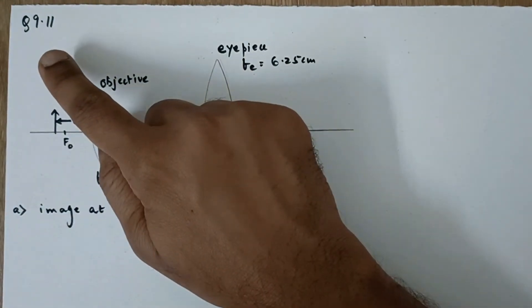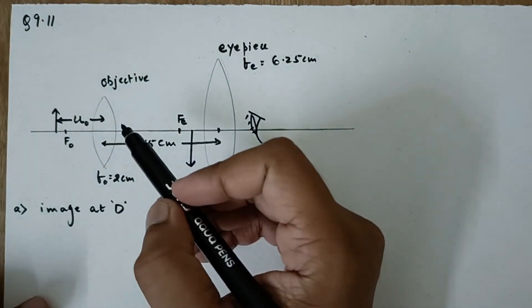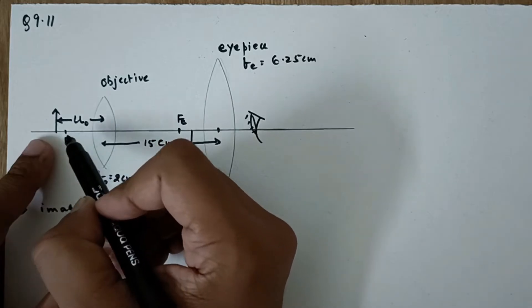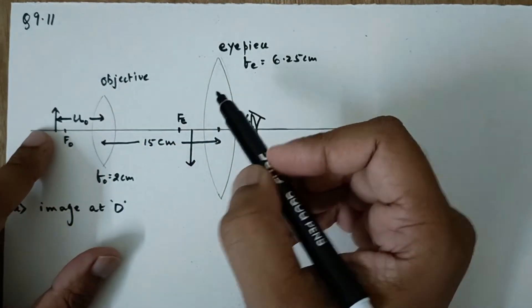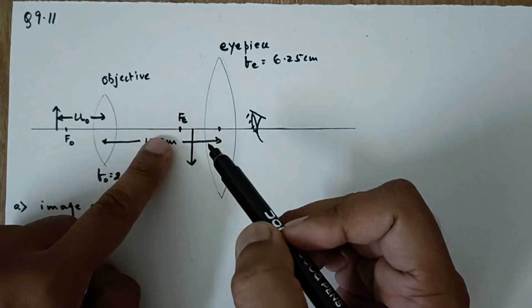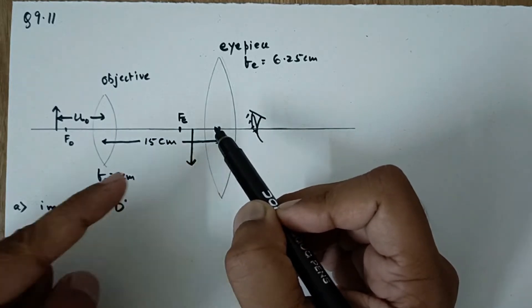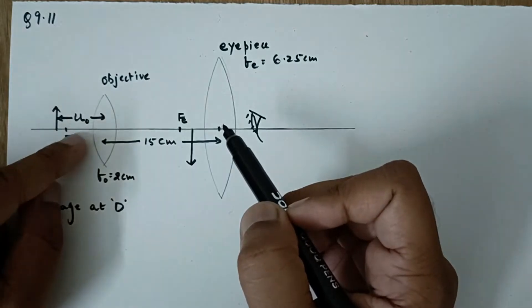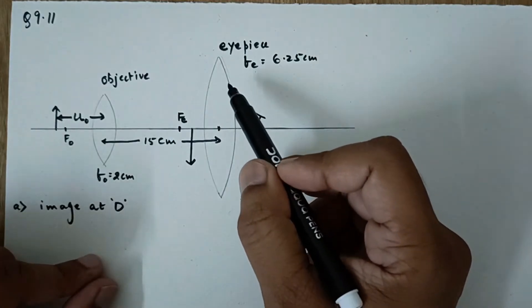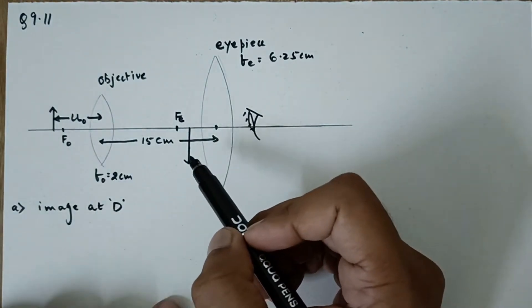We are discussing problem number 9.11, standard 12 physics, ray optics. In a compound microscope, we place the object just beyond the focus of the objective lens. The image of this object is obtained beyond 2f of the objective lens, and this image behaves as an object for the eyepiece. The final image can be obtained at infinity or at a distance of 25 centimeters from the eye of the observer, placed very near to the eyepiece.